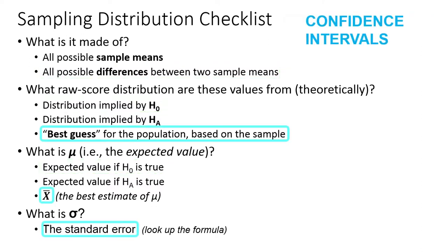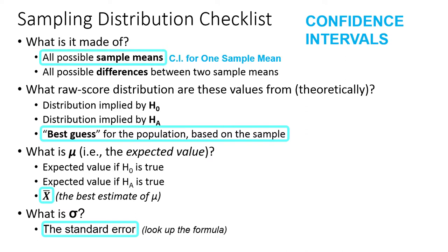For confidence intervals, you have your best guess for the population based on the sample. For a difference between means, this is going to be not just the sample mean, but the difference between two sample means. It's the value from your sample — our best estimate. For confidence intervals, we go with the best estimate of what's going on in the population from our sample.